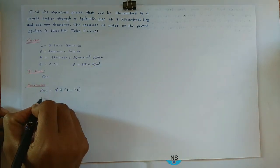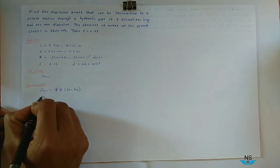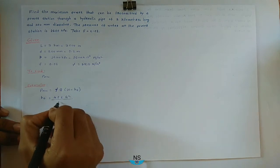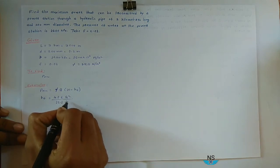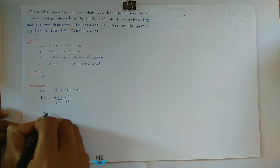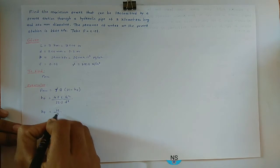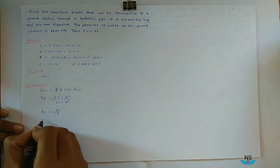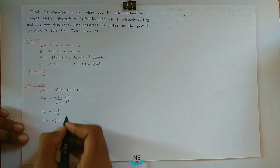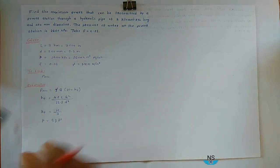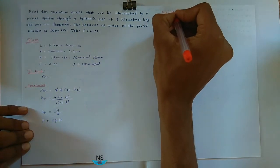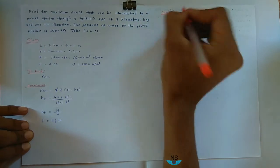We have to find Q from HF. HF is equal to 4 F L Q square divided by 12.1 into D raised to 5. For maximum power condition, HF is equal to H divided by 3. And H we find from pressure formula, P is equal to rho G H. So these formulas are required for solution.